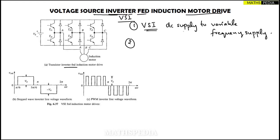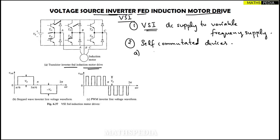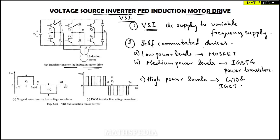This diagram is about the VSI employing transistors. Six transistors are used, named TR1, TR4, TR6, and so on. Instead of transistors, we can use any self-commutated devices. These self-commutated devices can be categorized by power levels: low power, medium power, and high power levels — for example, GTO and IGCT can be used at high power levels.